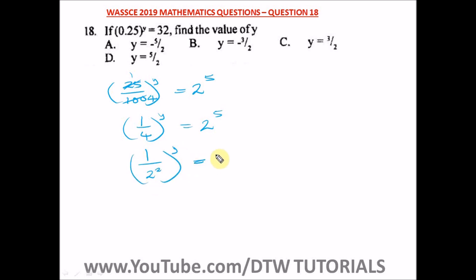This 2 raised to power 2 can come up. Remember in indices, when you have an inverse of a power, when it comes up it becomes a negative.